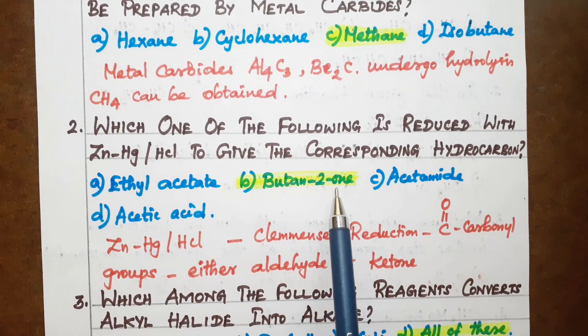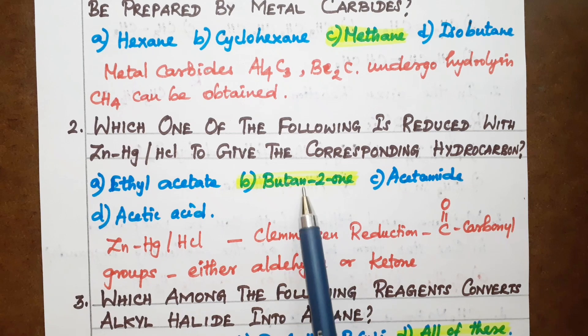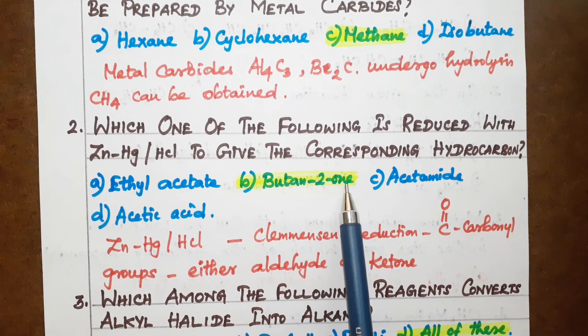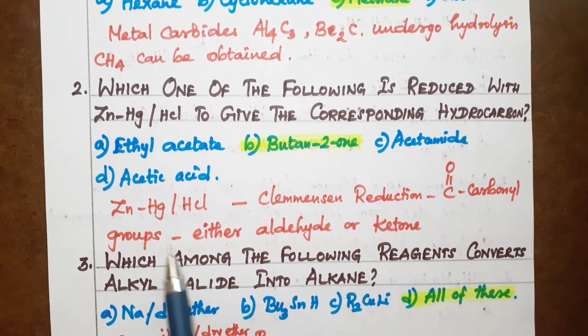Butane-2-one is a ketone. Acetamide is an amide. Acetic acid is a carboxylic acid. Butane-2-one is a ketone, so option B is the correct answer.